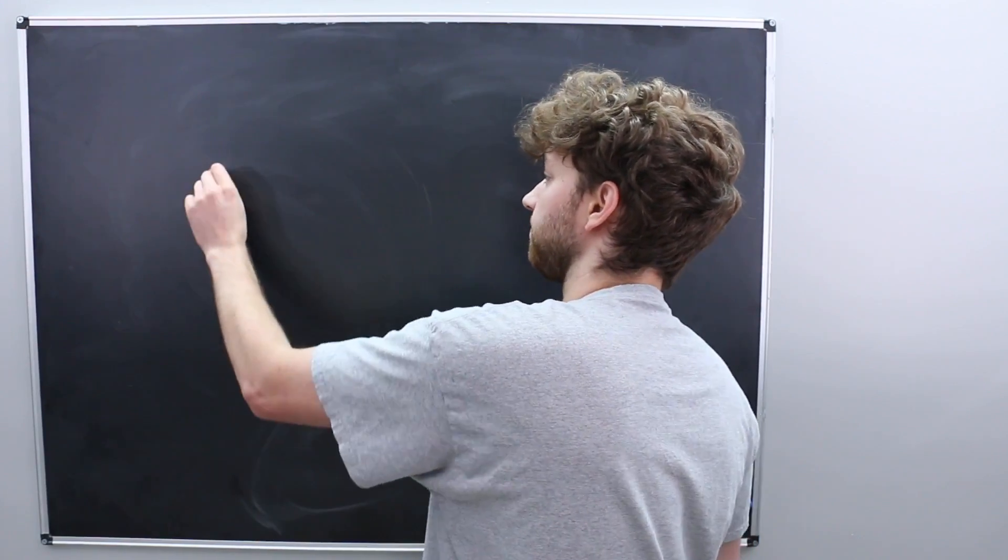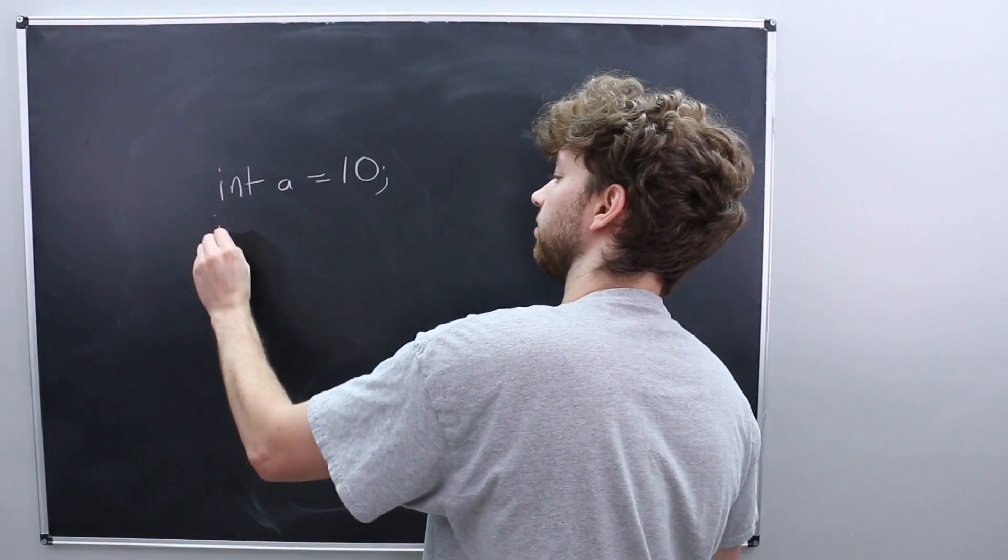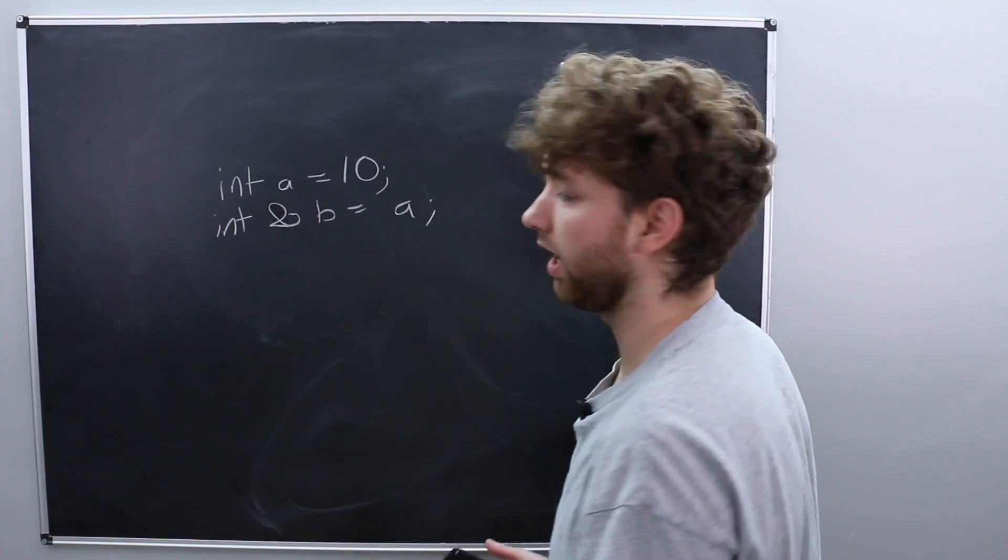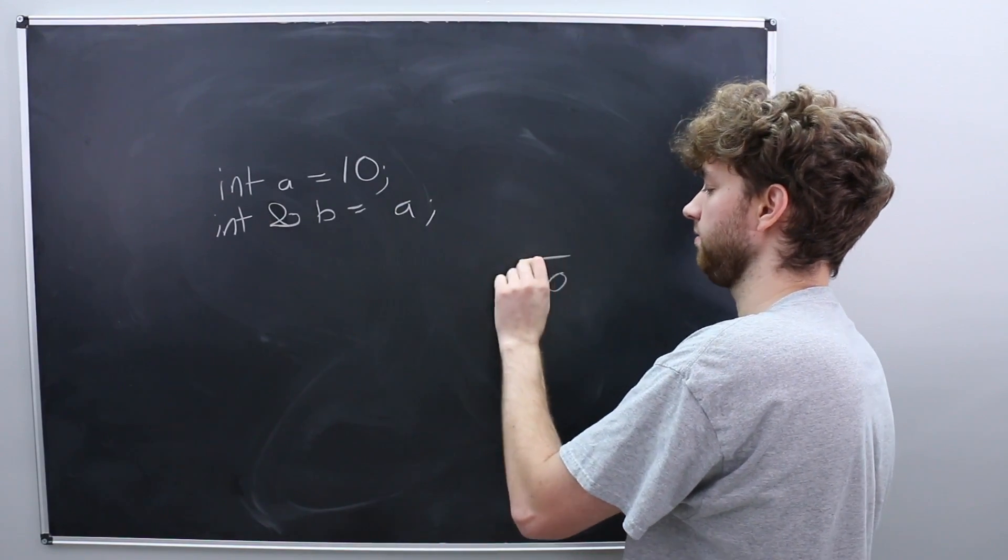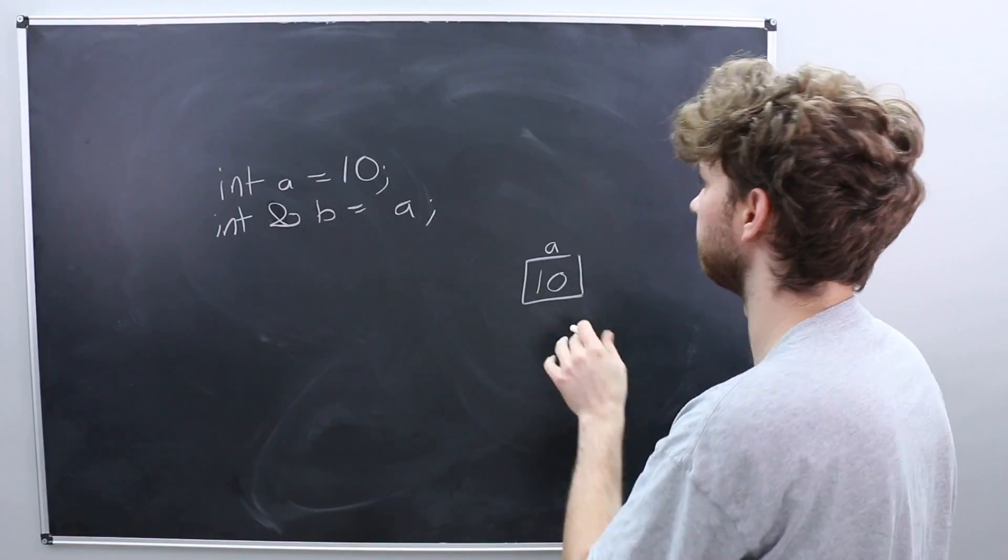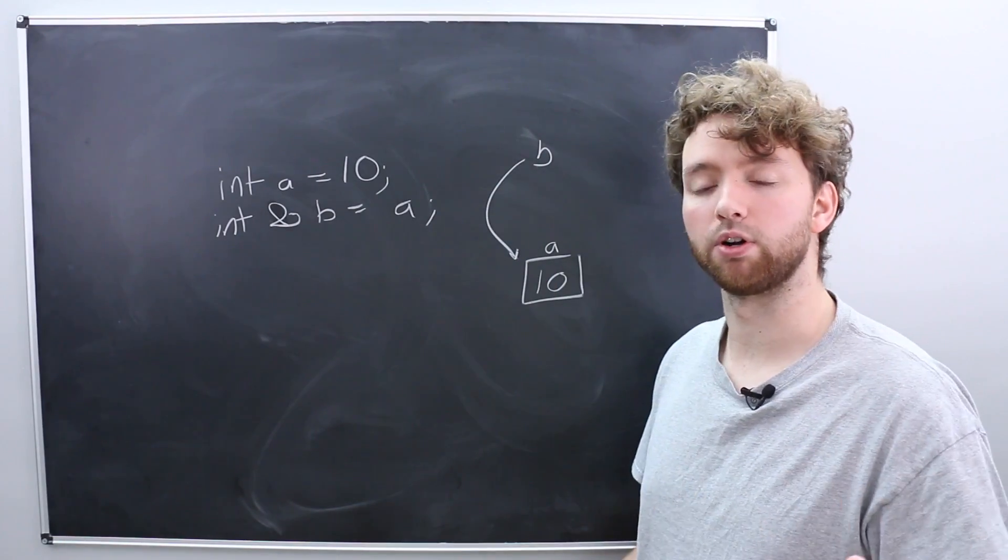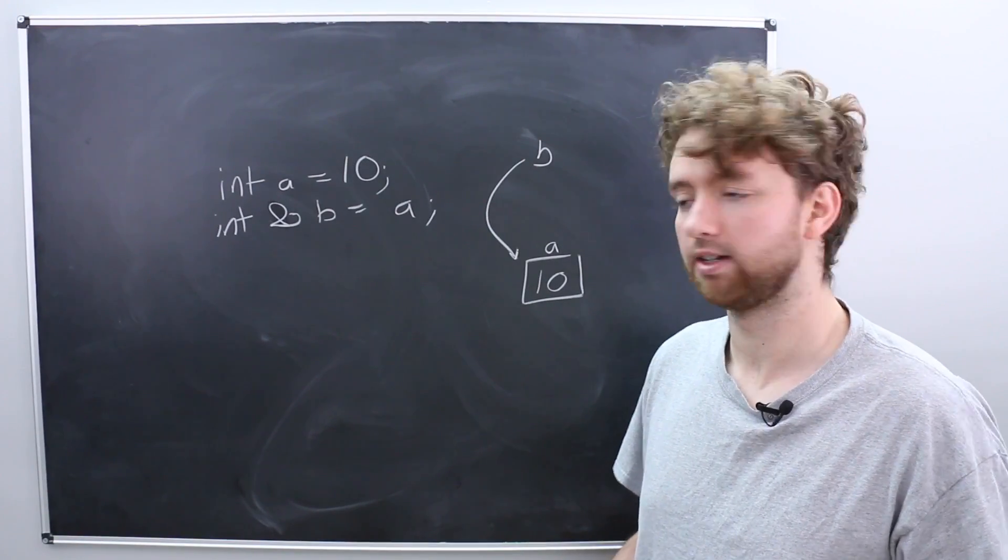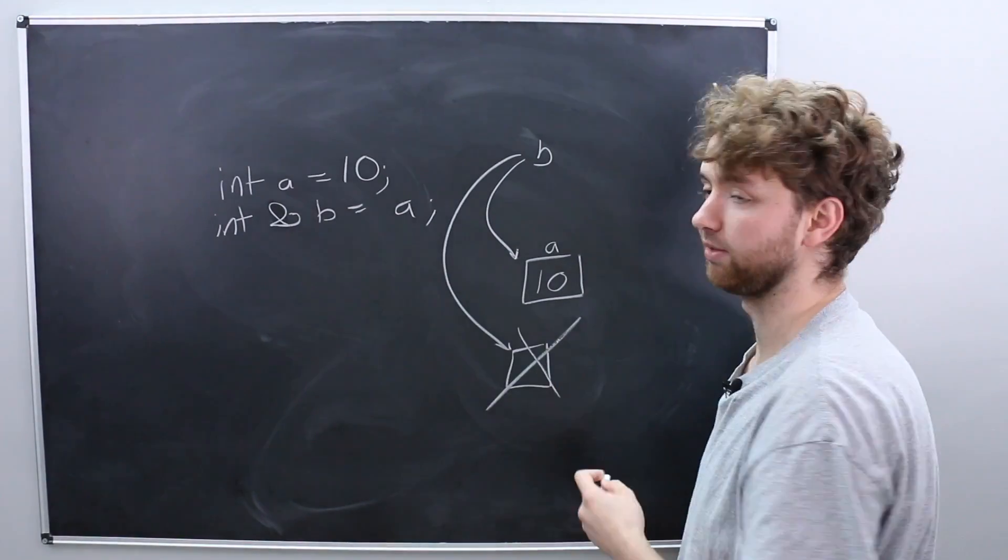If you have a variable a and we will assign it the value 10 and then you create a reference to this variable and we will call it b. Again this is just a review real quick. a is going to contain the value 10 and we'll draw that here. So that is a representation of what it might look like in memory and then b is going to refer to that. The thing I want to call out here is that you cannot change where b refers to.